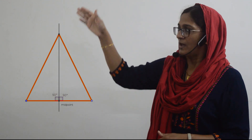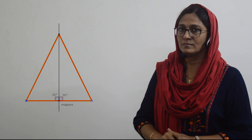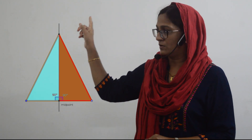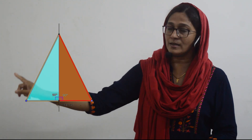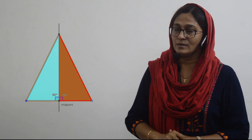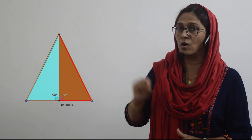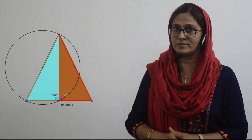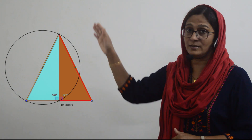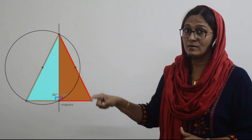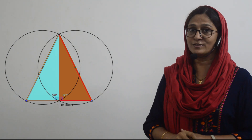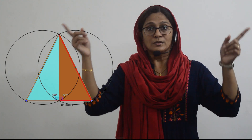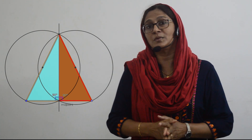When we draw the perpendicular bisector, the isosceles triangle splits into two right triangles. Consider the first right triangle: if we draw a circle with one of the equal sides as the diameter, the 90-degree angle will fall on the circle, as shown in the figure. The same thing happens with the other equal side — the circle drawn with that side as diameter will also pass through the 90-degree point, which is the midpoint of the base. Hence, the two circles drawn on the two equal sides as diameters both pass through the midpoint of the third side.